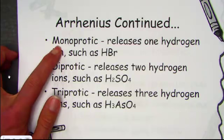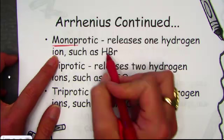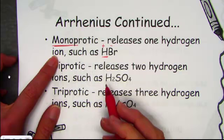If an acid is said to be monoprotic — see that prefix mono, I think of the number 1 — monoprotic acids release a single hydrogen ion. If I look at a formula and just based on charge I crisscross and have just one proton, one hydrogen ion that creates a neutral compound, it's called monoprotic.